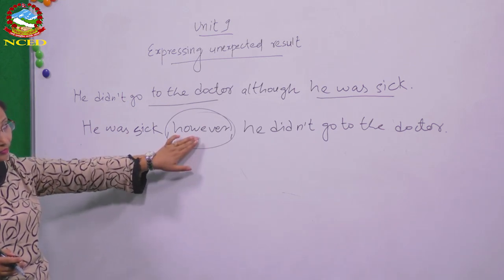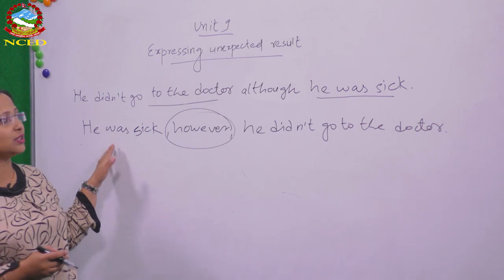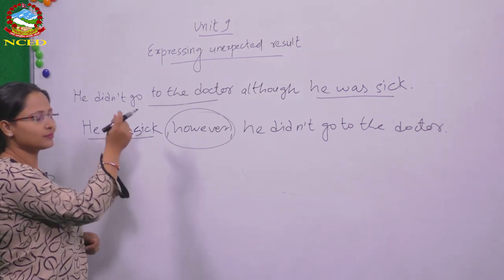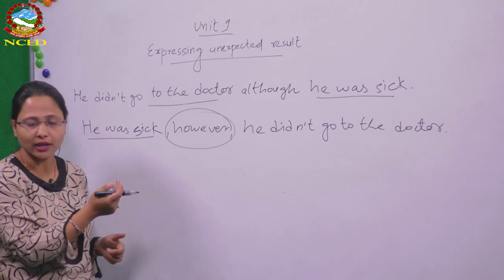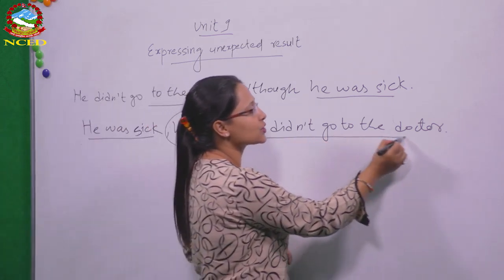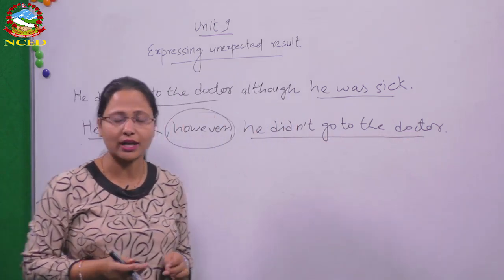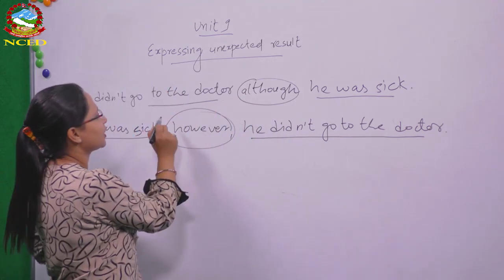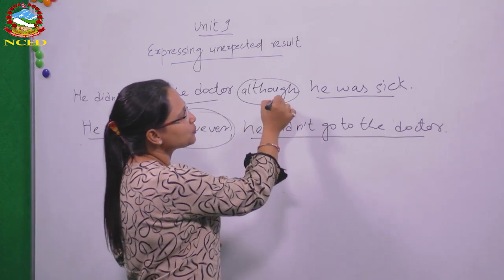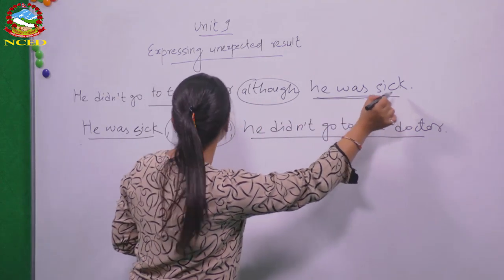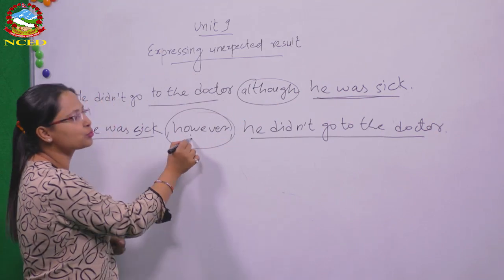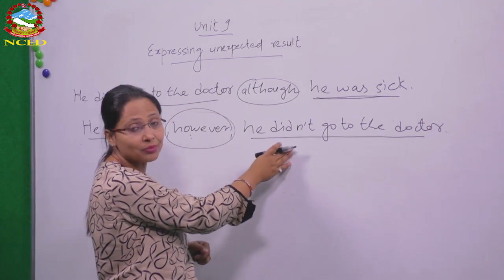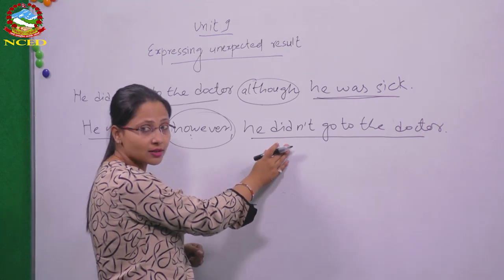When we use 'although,' it is placed before the situation. But 'however' is placed before the unexpected result — that is the difference you have to remember. 'Although' goes before the situation, but 'however' goes before the unexpected result, not the situation. That is the major difference.